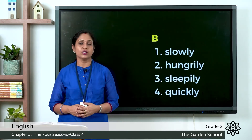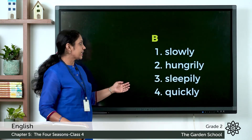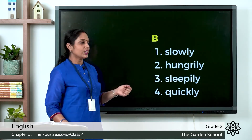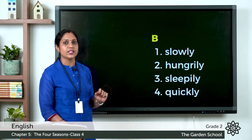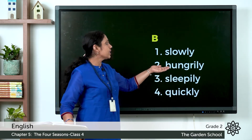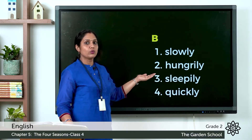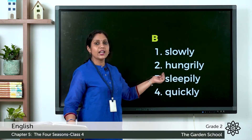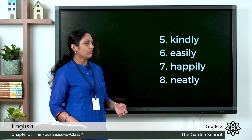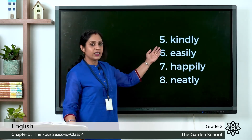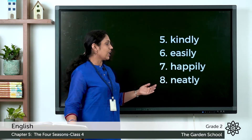Let's check the answers. Slow becomes slowly. Hungry ends with Y, so we omit Y and add I — it becomes hungrily: H-U-N-G-R-I-L-Y. Sleepy similarly becomes sleepily — omit Y, add I. Quick becomes quickly, kind becomes kindly, easy becomes easily, happy becomes happily, and neat becomes neatly.